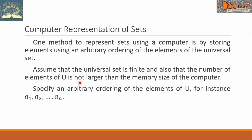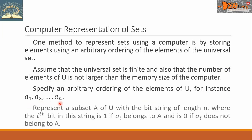Specify an arbitrary ordering of the elements of U — for instance, a sub 1, a sub 2, up to a sub n. Then represent a subset A of U with a bit string of length n, where the ith bit in this string is 1 if a sub i belongs to A, and is 0 if a sub i does not belong to A.